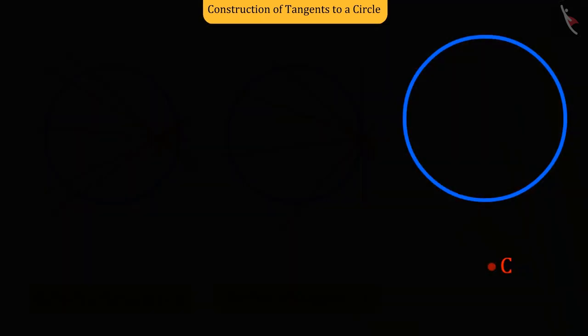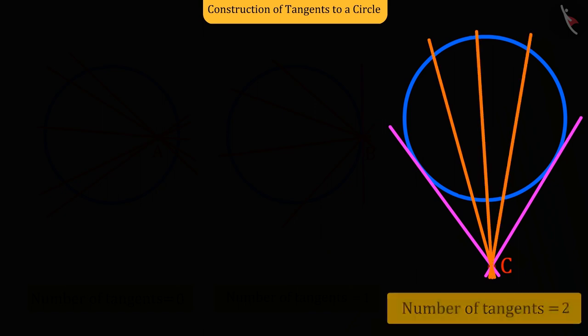And only two tangent lines can be drawn from a point outside the circle.